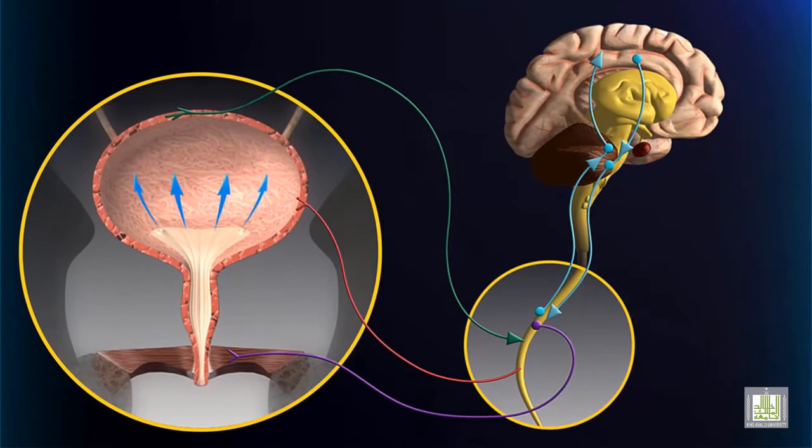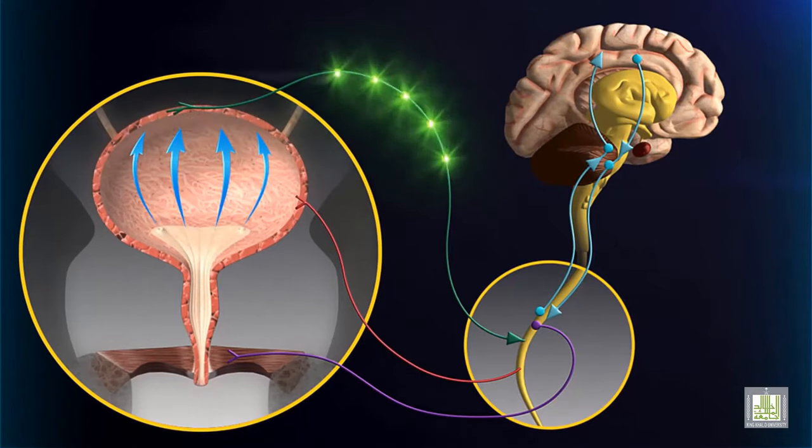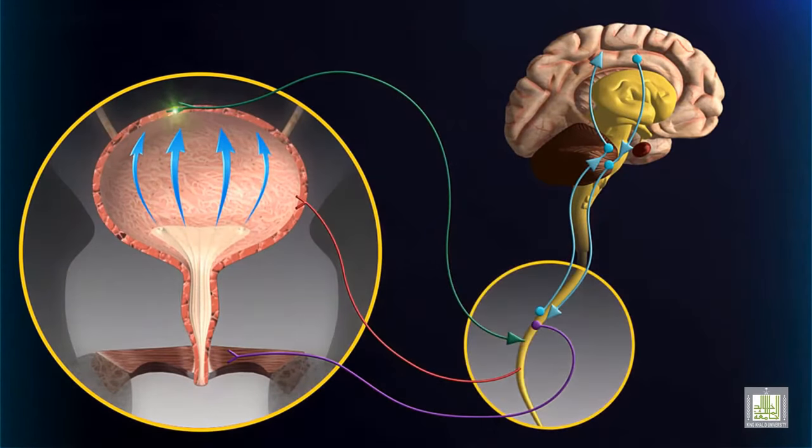When the urinary bladder becomes stretched, there is an increase in the frequency of action potentials carried from the bladder wall to the sacral region of the spinal cord.